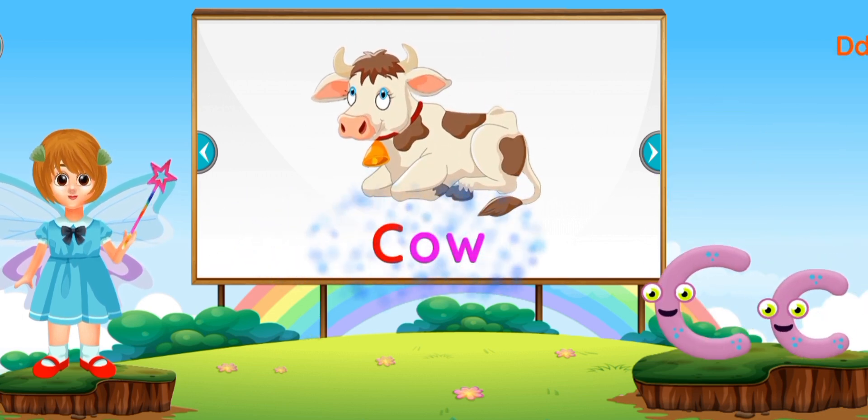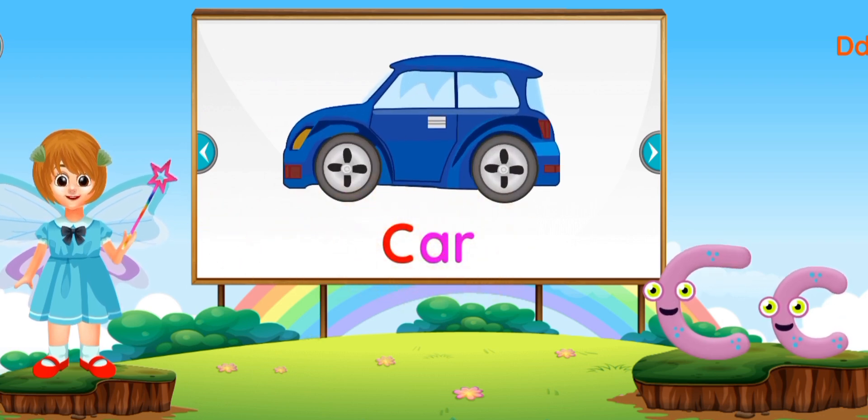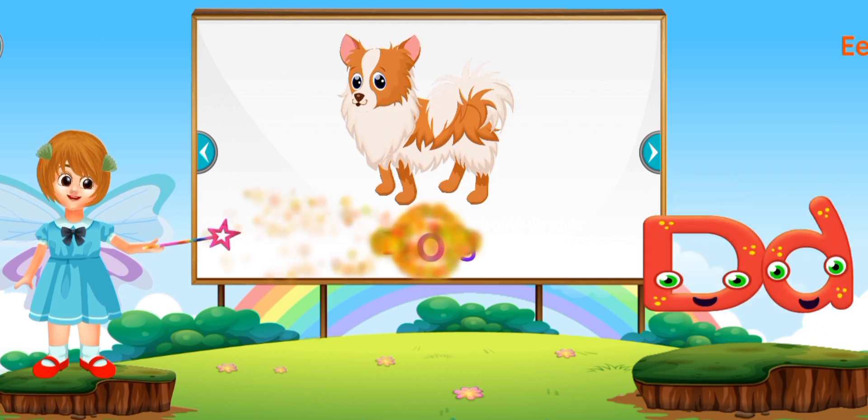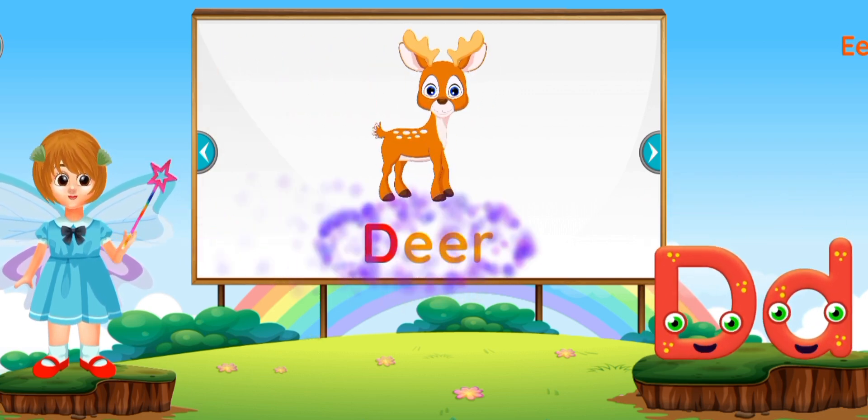C for Cow, C for Car. D for Dog, D for Deer.